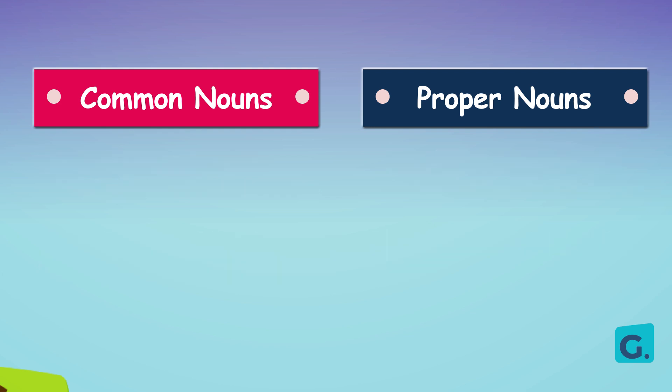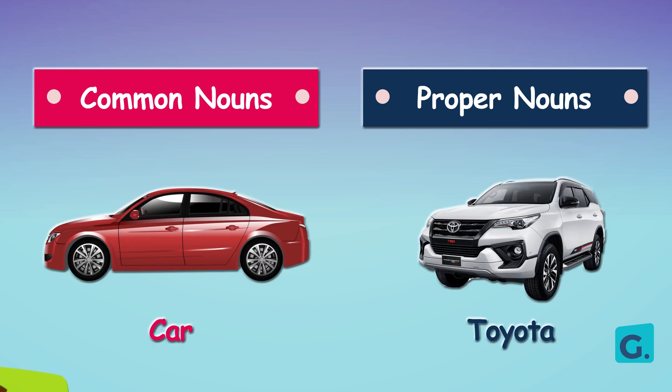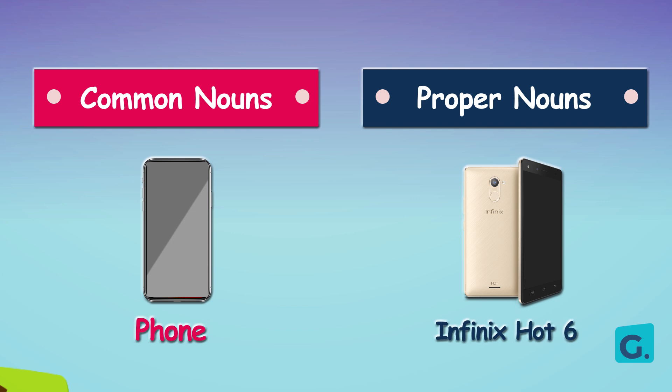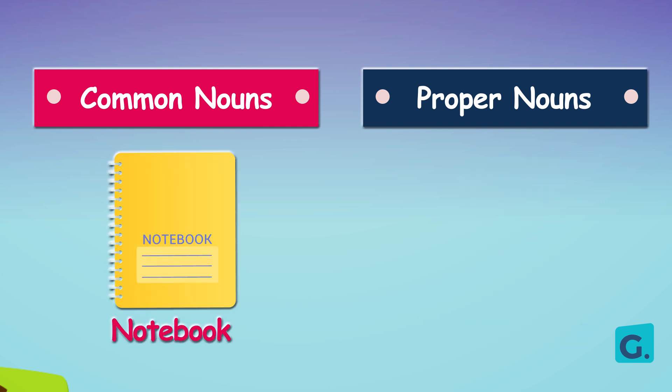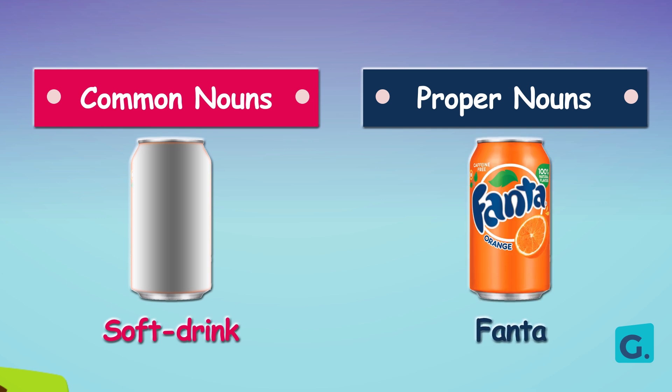Look at this box — common noun versus proper noun: car / Toyota, phone / Infinix Hot Six, notebook / Oxford, soft drink / Phantom. Here we see the general name of the item and the particular item we are referring to. Let's use the common noun and the proper noun in a sentence.